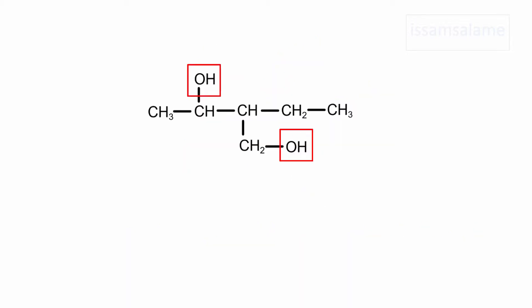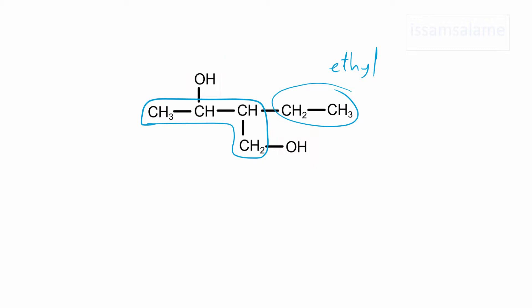In all the previous structures we had only one hydroxyl group, but what if we have two hydroxyl groups in the same structure? When we have more than one hydroxyl group, the longest chain should include the maximum possible number of hydroxyl groups. Here the longest chain includes both hydroxyl groups, and here we have one branch which is ethyl.